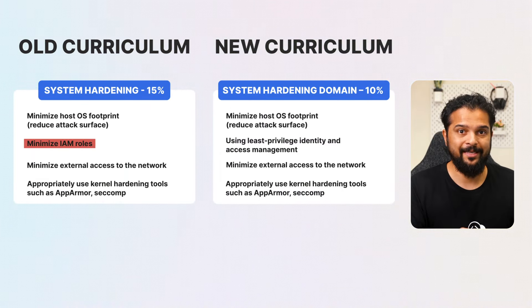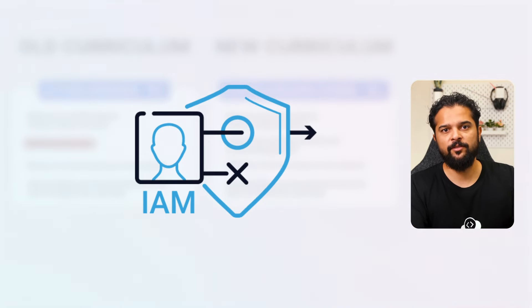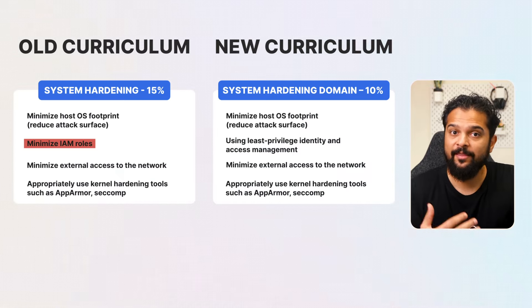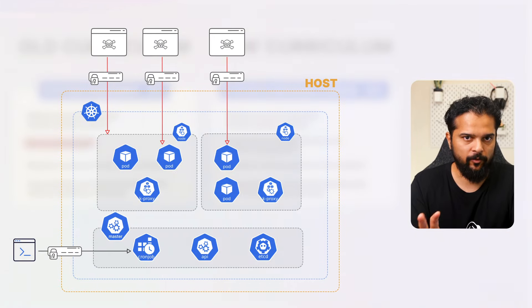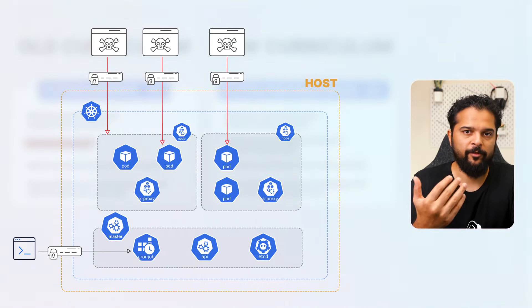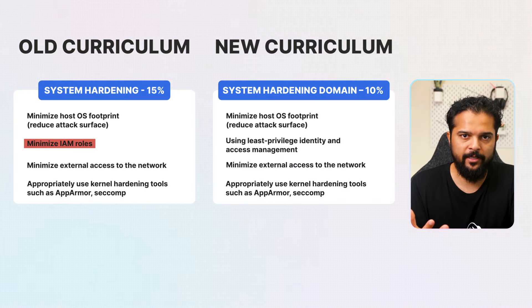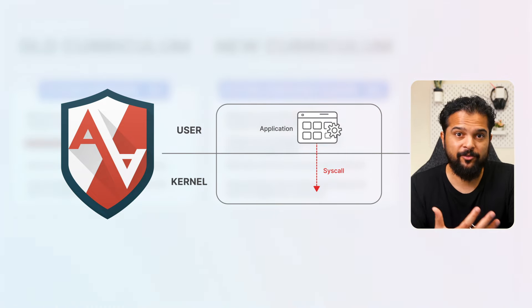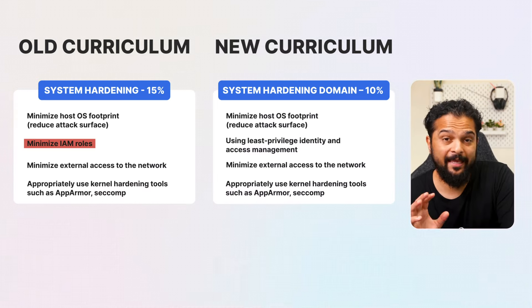Minimizing the OS footprint involves stripping down the OS to its essential components, removing unnecessary packages and services that could be exploited by attackers. Another key practice is minimizing IAM (identity and access management) roles, ensuring that users and services have the least privilege necessary. By limiting permissions, you reduce the potential damage if an account is compromised. Additionally, minimizing external access to networks prevents unauthorized entities from reaching your Kubernetes cluster, reducing the risk of external attacks.